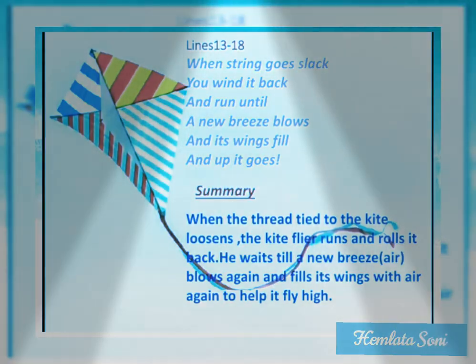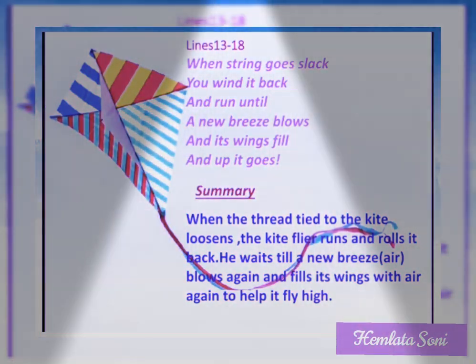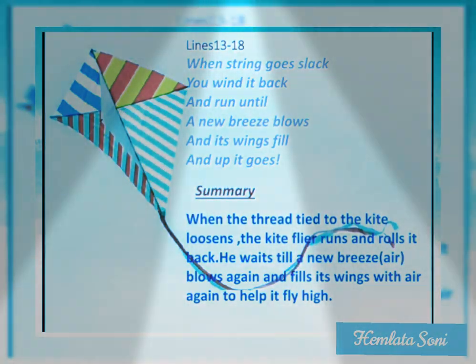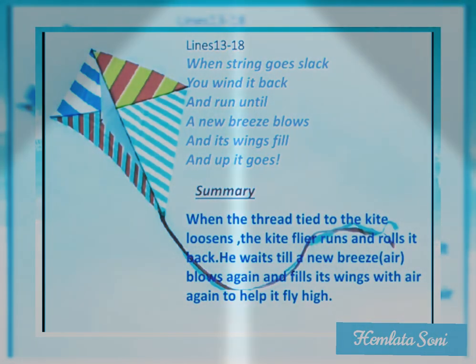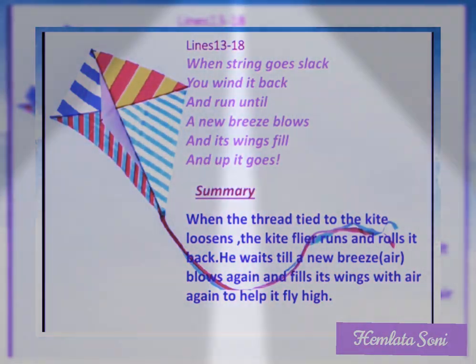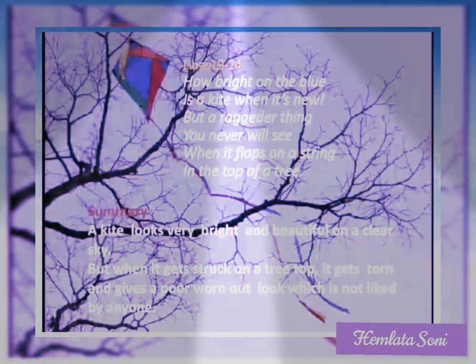Lines 13 to 18: When the string goes slack, you wind it back and run until a new breeze blows and its wings fill and up it goes. When the thread tied to the kite loosens, the kite flyer runs and rolls it back. He waits till a new breeze blows again and fills its wings with air again to help it fly high in the air.